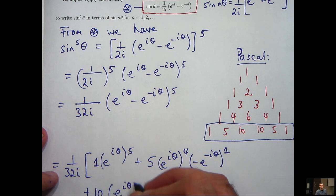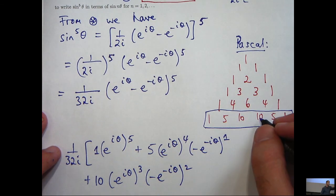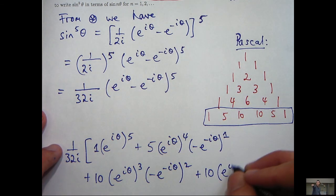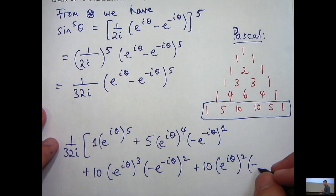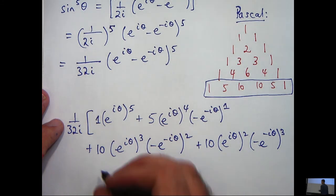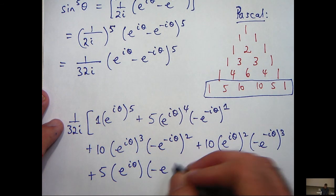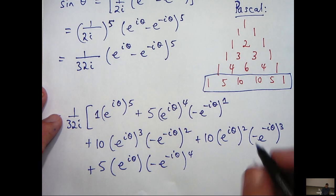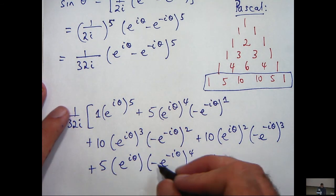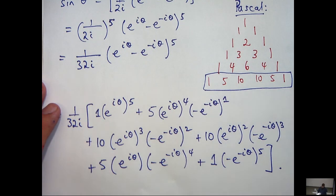And I continue over. The next coefficient is going to be 10. I decrease this power by 1 and increase this power by 1. And just keep on working. The next coefficient is going to be 10. Again, decrease this power by 1, increase this power by 1. Keep on going. The next coefficient is going to be 5. So this goes to 1 now. And lastly, this will go to 0. So it's just 1. And the power of 0 will just go to 1. And this will be 5.